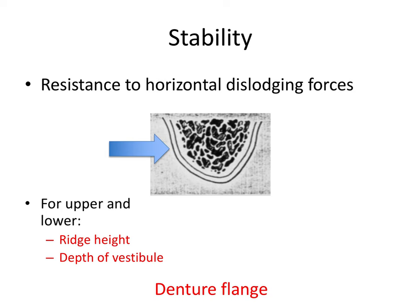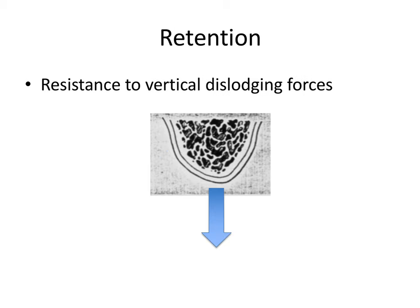Lastly, we have retention, where we go back to talking about resistance to vertical forces, but this time they're dislodging forces. Instead of pushing up against the tissue, we're pulling away from it — retention is about how we keep the denture in place. For this one, we're all about the peripheral seal. These three terms also come into play for partial dentures. If you can pick one thing from this entire series to really memorize, it's support, stability, and retention — their definitions and the areas of the denture they're associated with are critical for the board exam.